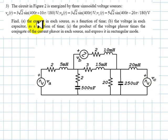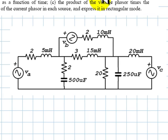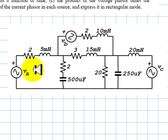The question is, Part A: find the current in each source as a function of time. Current here, current there, and current there.